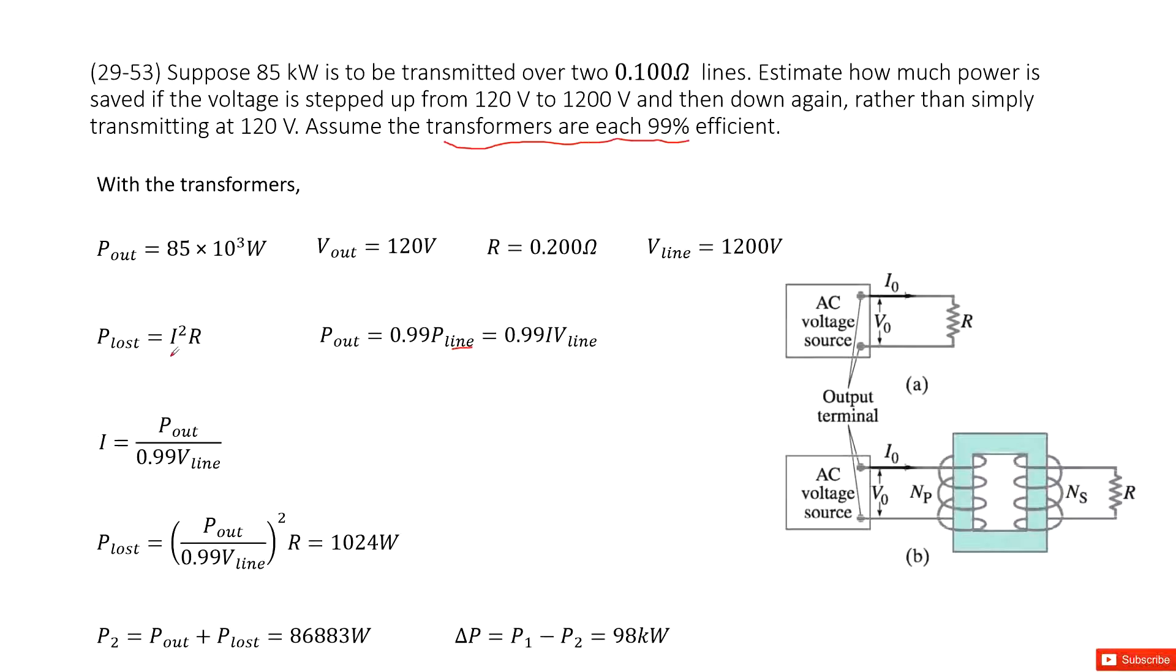And the P_lost is still the energy consumed by the cable, so I squared times R. So it looks like we need to find the current I. The current I should use the P_out over the V_out.